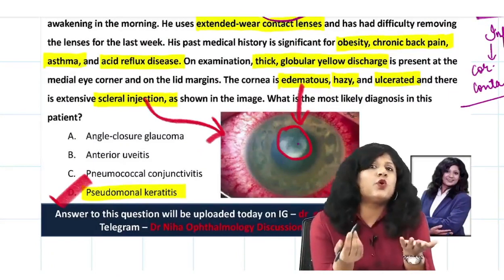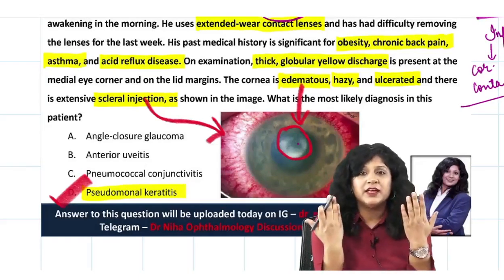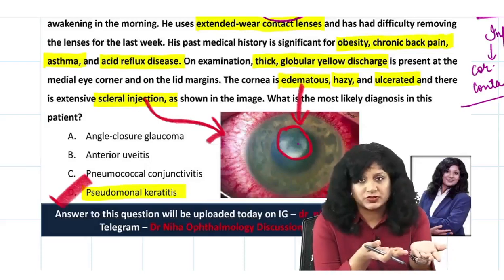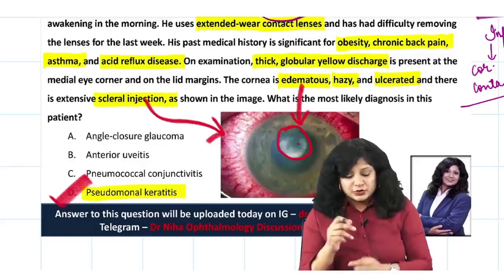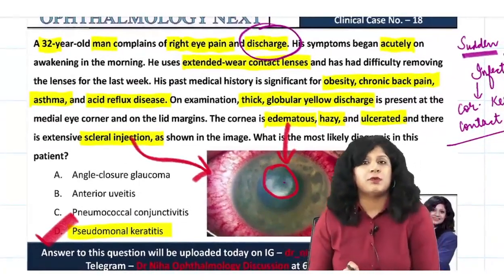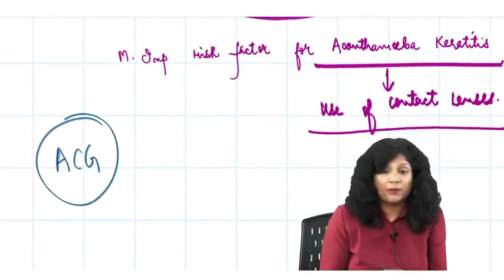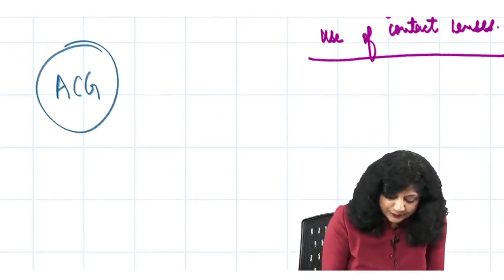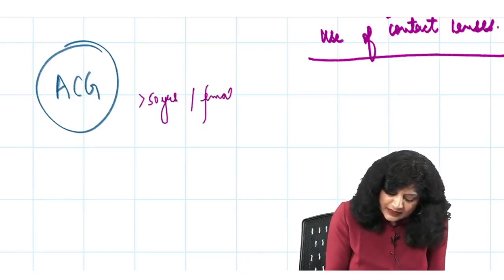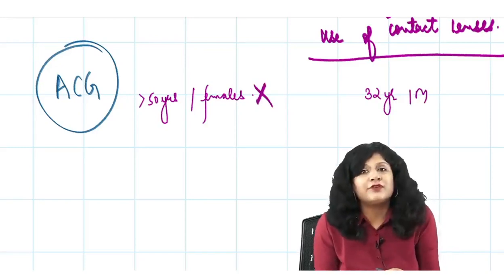Suppose you don't know this fact and you are preoccupied with acanthamoeba and panicky because it's not in the options. Start ruling out the wrong options. Option one: angle closure glaucoma. If I talk about a patient with angle closure glaucoma, the age has to be more than 50 years and it is more common in females. Here they have told you a 32-year-old male, so this goes against the diagnosis of acute congestive glaucoma.